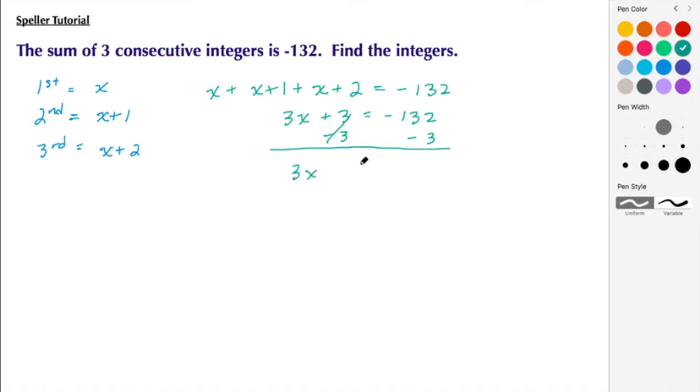Then to get this X by itself, I need to divide both sides by three. These threes cancel, leaves me with X. And now I have negative 135 divided by three, and that's going to give me negative 45. So I have my first integer, which is negative 45.